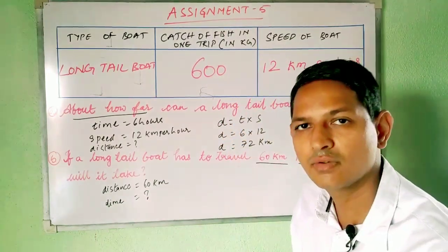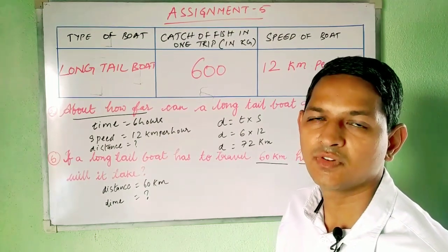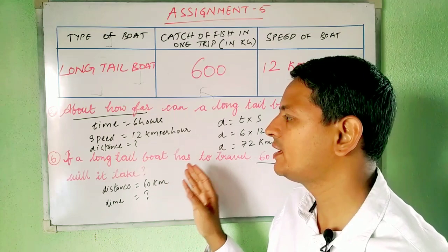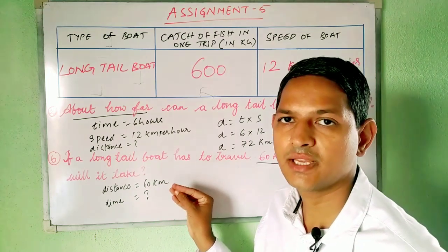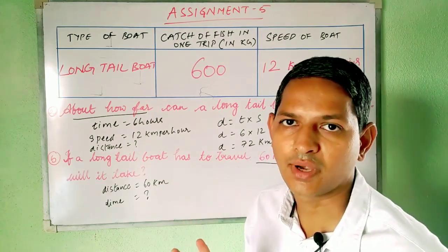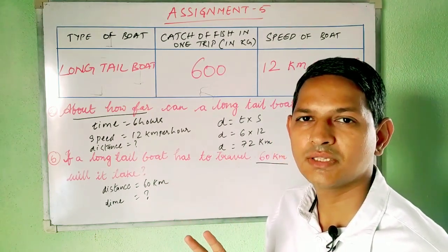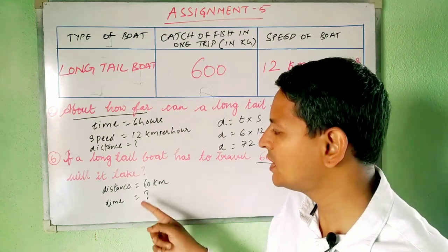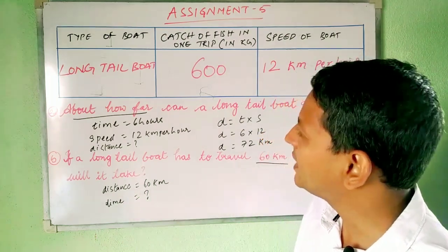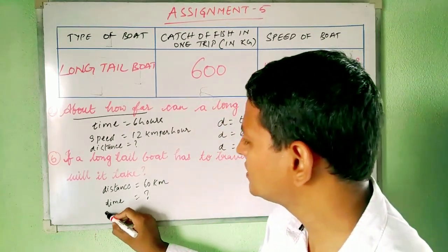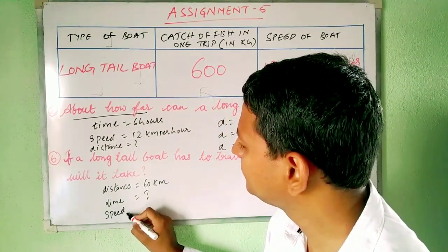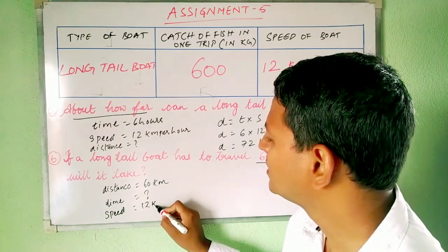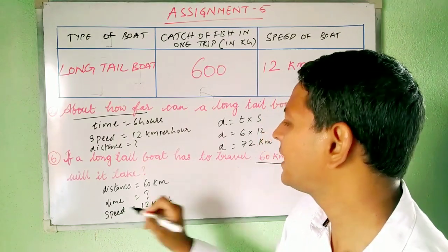Whenever we are trying to solve a word problem, we need to read it twice or thrice to understand two important points: what is given, and what is asked. Here, distance is given as 60 km, and speed is also given as 12 kilometers per hour. So distance and speed are given, and time is asked.